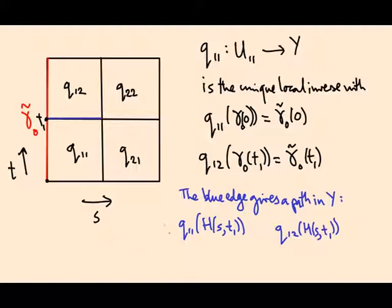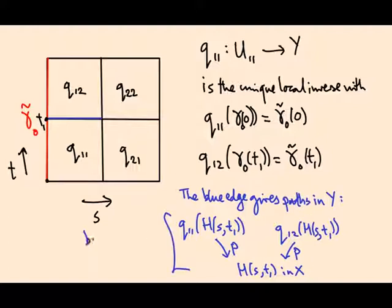And both of these paths project down to the same path. They both project down to h(s, t_1) under the projection map, the covering map p, because that's an inverse for q_11 and for q_12. So they're both lifts of this path in x. So it doesn't just give one lift, one path, maybe I'll say it gives two paths.